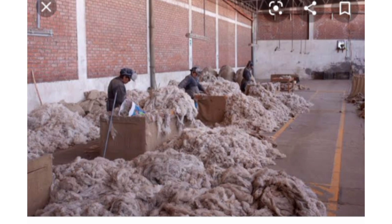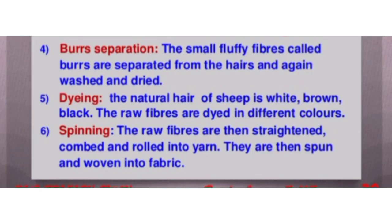The fourth step is burr separation. In this step, the small fluffy fibers called burrs are separated from the hairs and again washed and dried. These are the same burrs which sometimes appear on your sweaters. The fifth step is dyeing - the natural hair of sheep is white, brown, or black. The raw fibers are dyed in different colors to get different types of color.